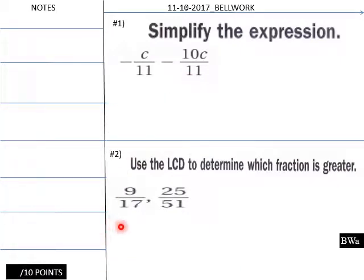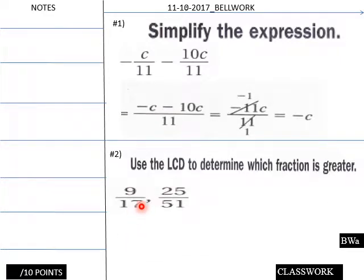Welcome back for your solutions to today's bell work. So simplifying this expression here, what do we do? We subtract straight across: c minus 10c over 11. It's negative 11c over 11. These cancel and we get negative c.